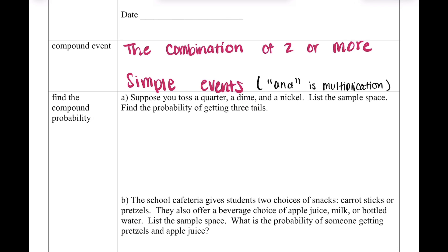Looking at the first example: suppose you toss a quarter, a dime, and a nickel — list the sample space and find the probability of getting three tails. We haven't gone much into sample space, but basically it's just listing all of your options. I would always recommend finding your probability first, and then writing out all your options, which is your sample space. The sample space has to be an exact number.